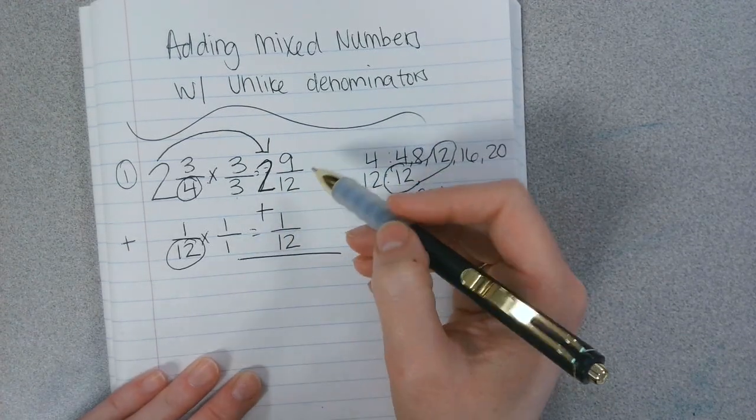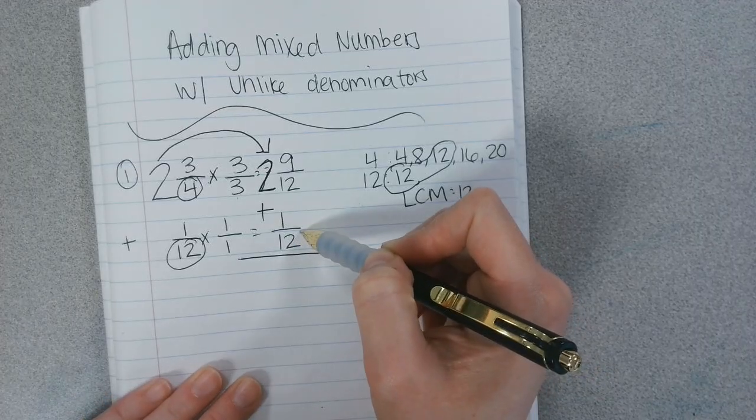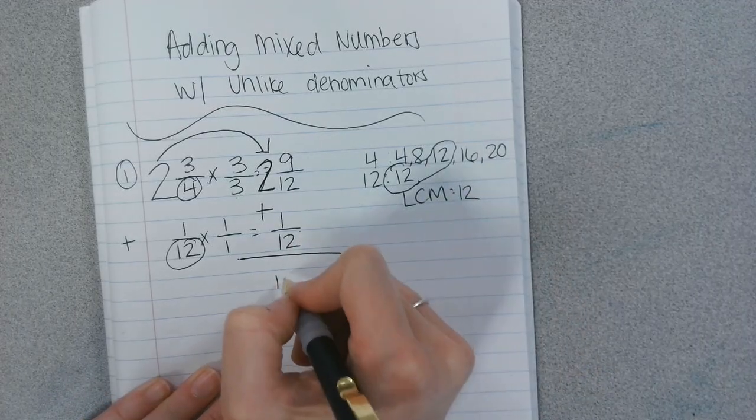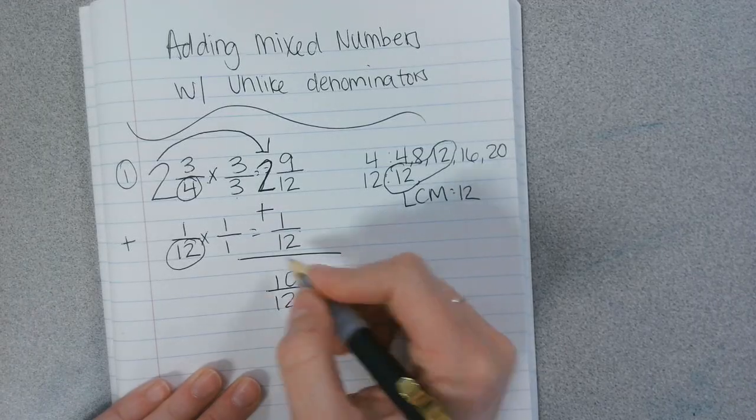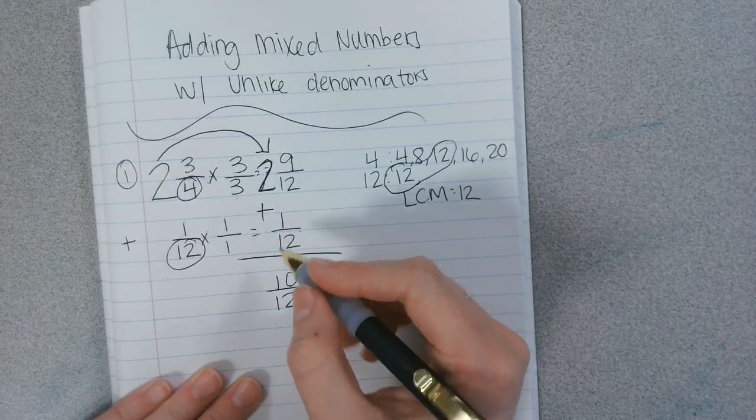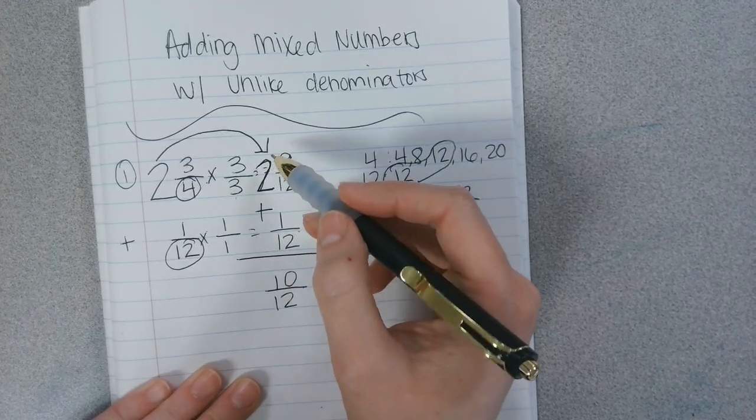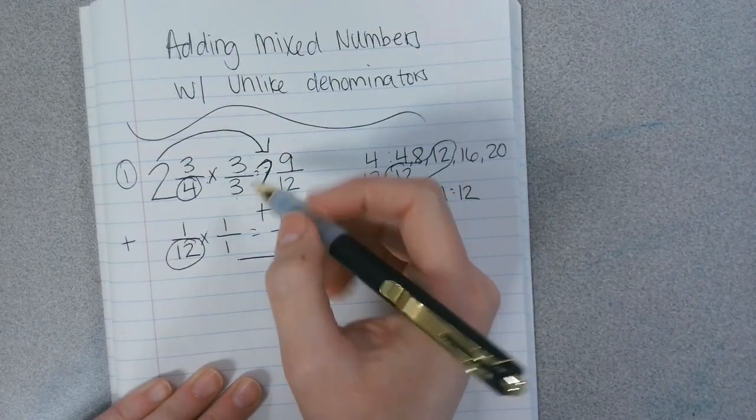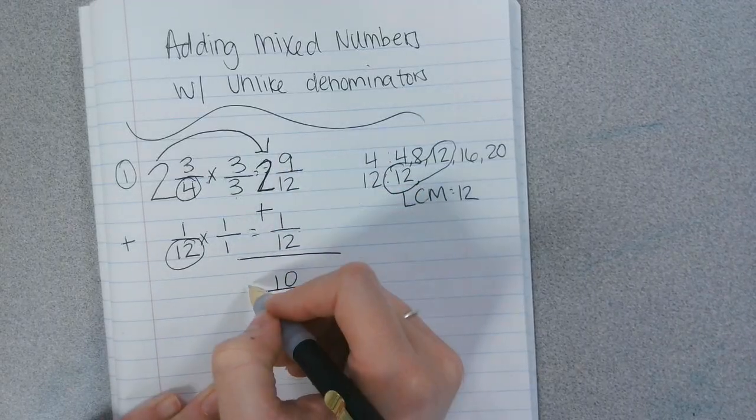I'm going to add the fraction first. 9 twelfths plus 1 twelfth equals how much? 10 twelfths. And some of you left this as your answer, but you're forgetting, like I talked about those pies. If there's two whole pies that we're talking about, you're forgetting those two whole pies. So 2 plus 0 is how much? 2.